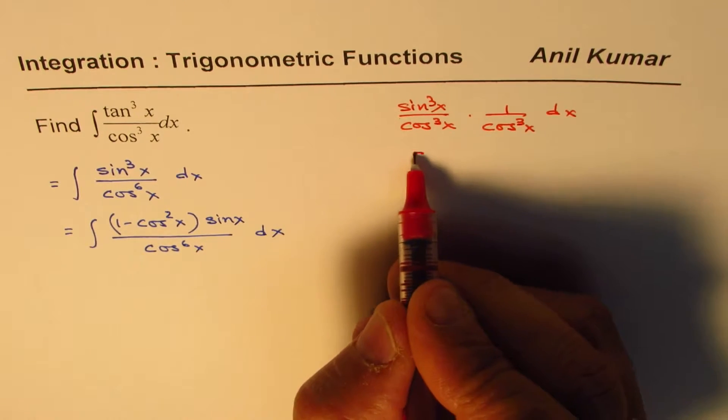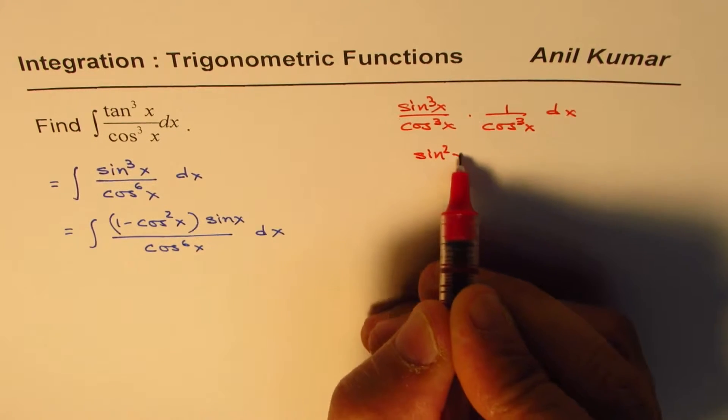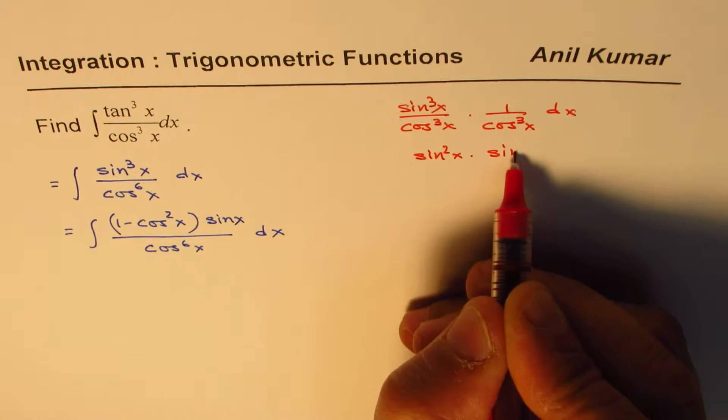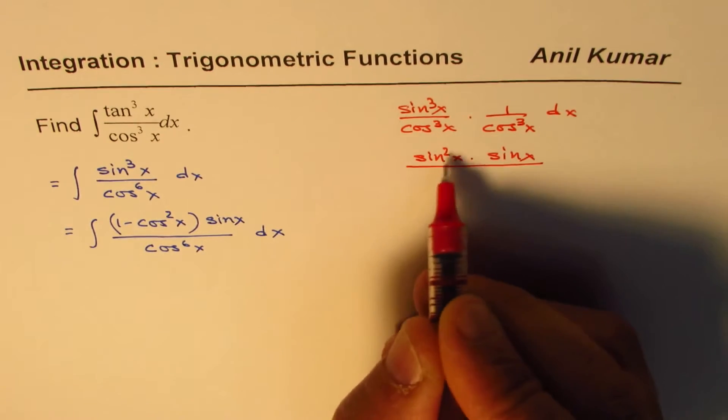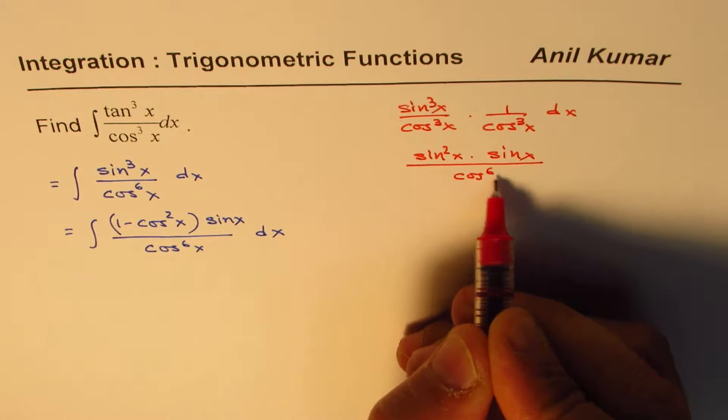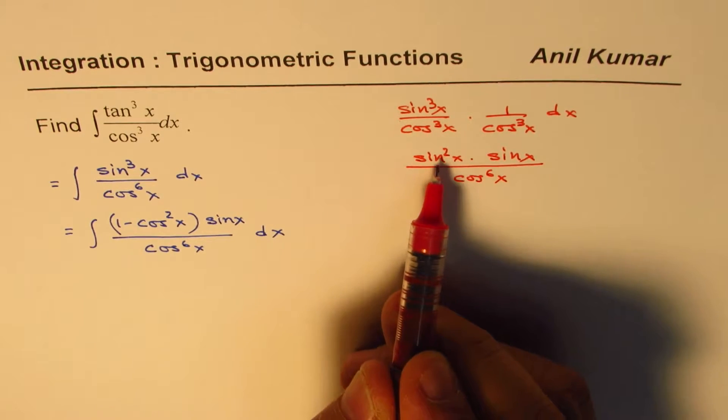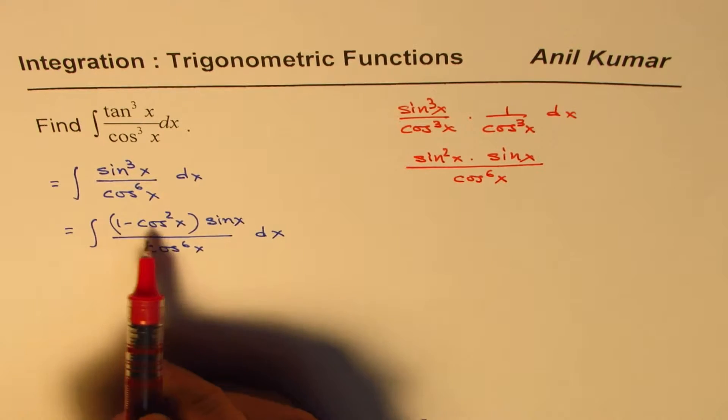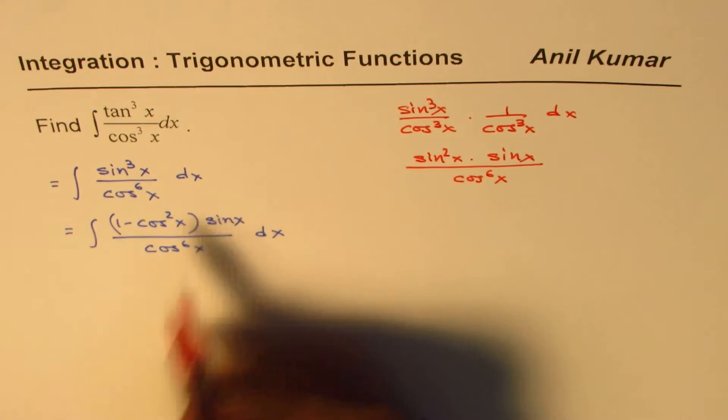In the second step, we wrote sine cube x as sine square x times sine x. Do you see that? And we have cos 6x. Now this sine square x is being written as 1 minus cos square x sine x, correct?